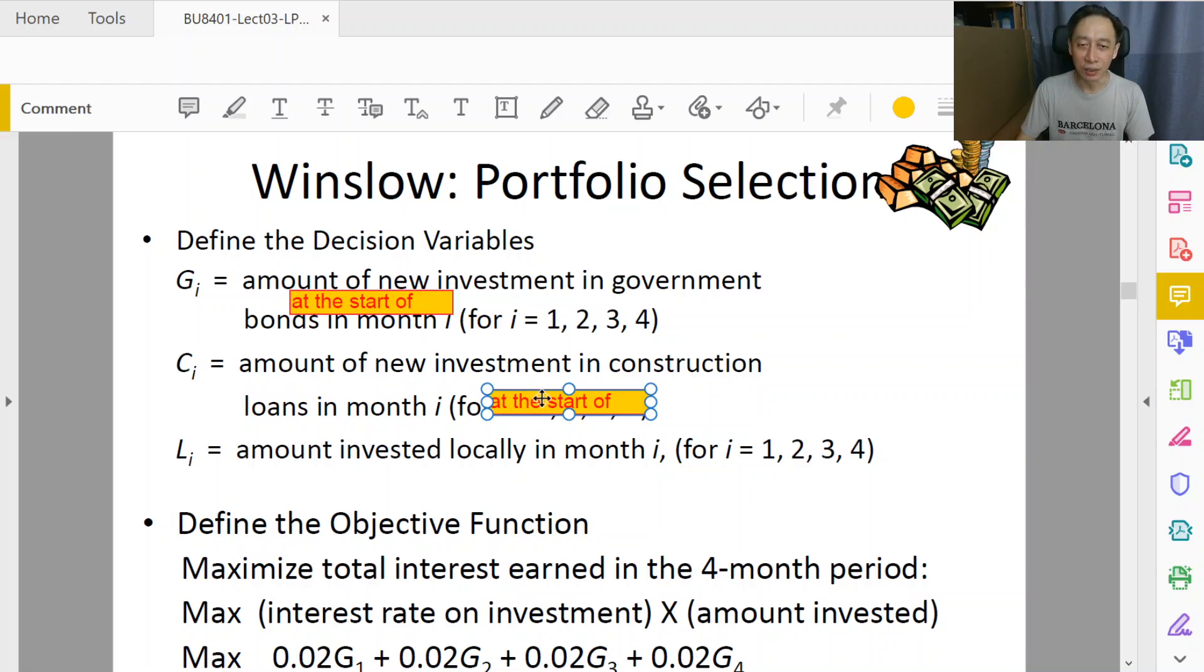All right, so at the start - just to be absolutely clear about the timing within the month - no doubt about it, it's at the start, not just in. In is not good enough because if we say G of 1 is 1 million, we don't know which day of the month to invest in still. We do not want ambiguity. We don't want the situation when you know the optimal solution and still cannot make decision. That's weird. That means your decision variable is not defined clear enough that we can execute right away. So at the start of each month we need to know how much to put into government, construction, and leave as liquid.